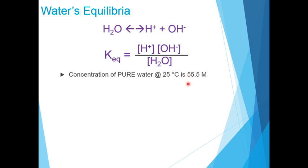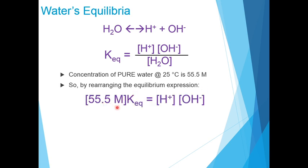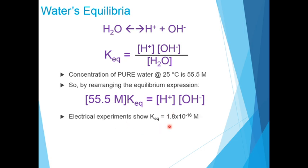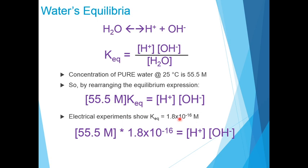The concentration of pure water at 25°C is 55.5 molar. By rearranging the equilibrium expression and plugging in the concentration of water at 25°C, electrical experiments show the equilibrium constant K-equilibrium is 1.8×10⁻¹⁶ molar. Plugging in this number for K-equilibrium gives us that the concentration of H⁺ times the concentration of OH⁻ is equal to 1×10⁻¹⁴.